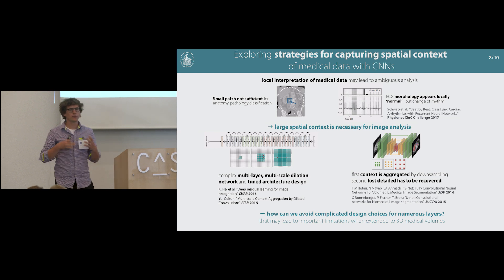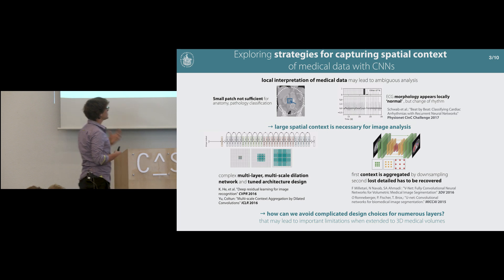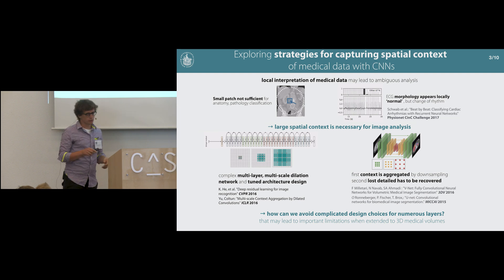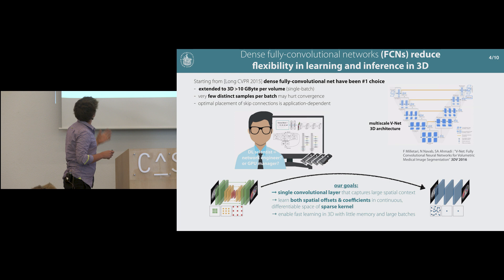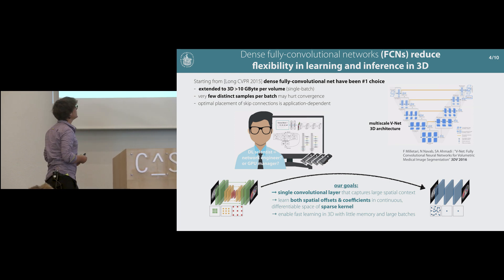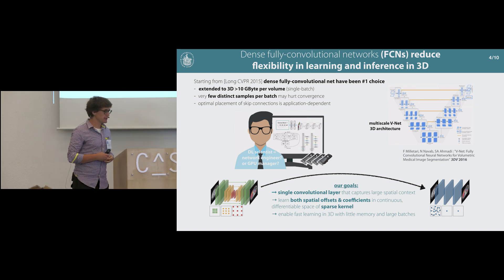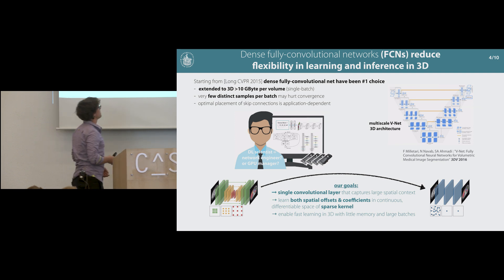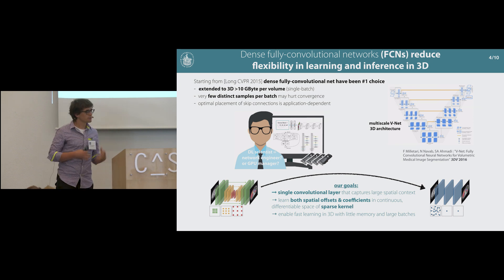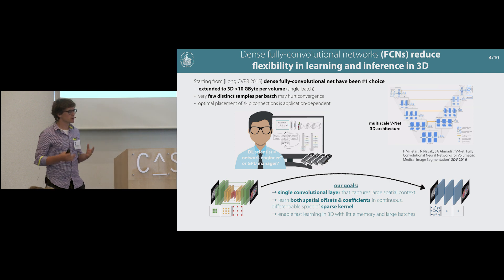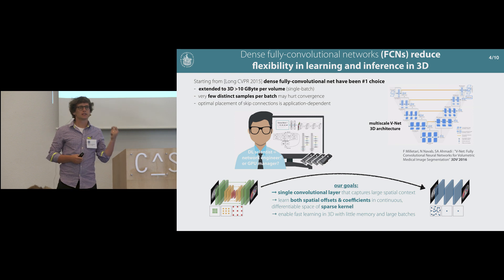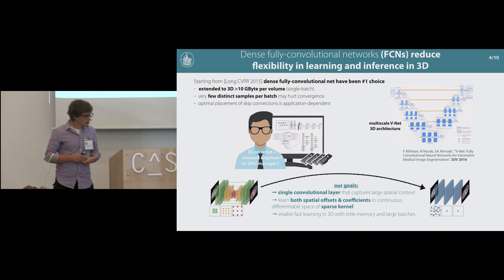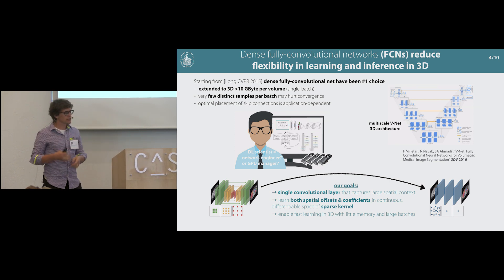But we asked ourselves, how can we avoid these complicated design choices and numerous layers, and also address some of the limitations when extending to 3D medical data? Dense fully convolutional nets are very good at inference on 2D images, but become quickly limited by memory constraints in 3D, leading to memory demands of up to 10 gigabytes and potentially just a single image in a batch. With small medical datasets, small batches can hurt convergence, so we aim to have more variability within batches and move away from dense inference methods.